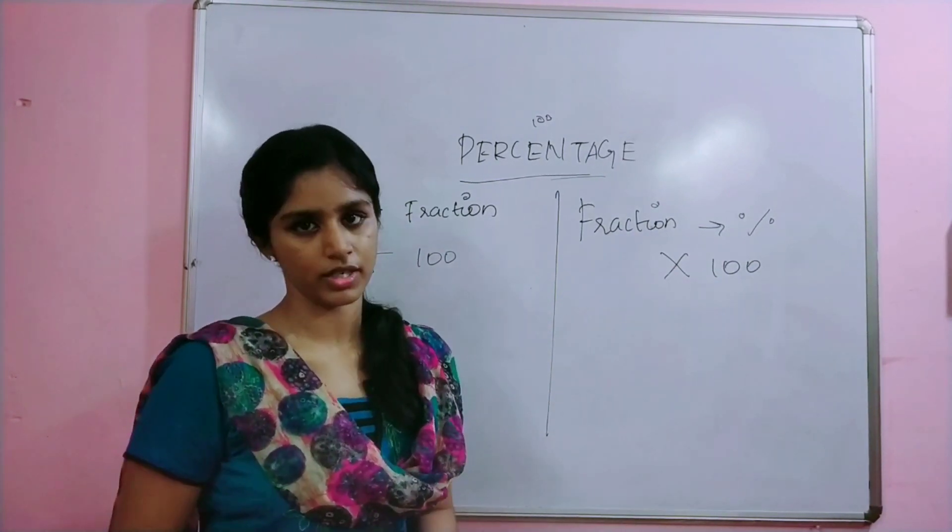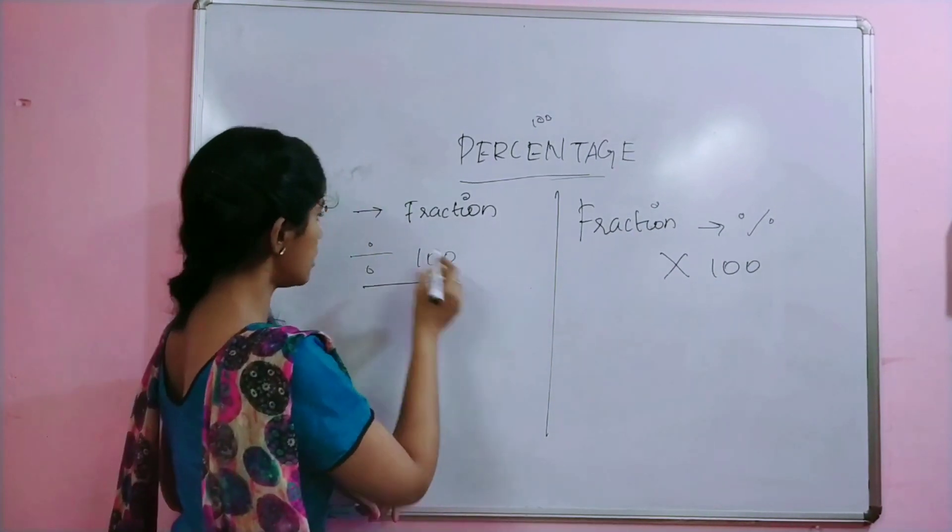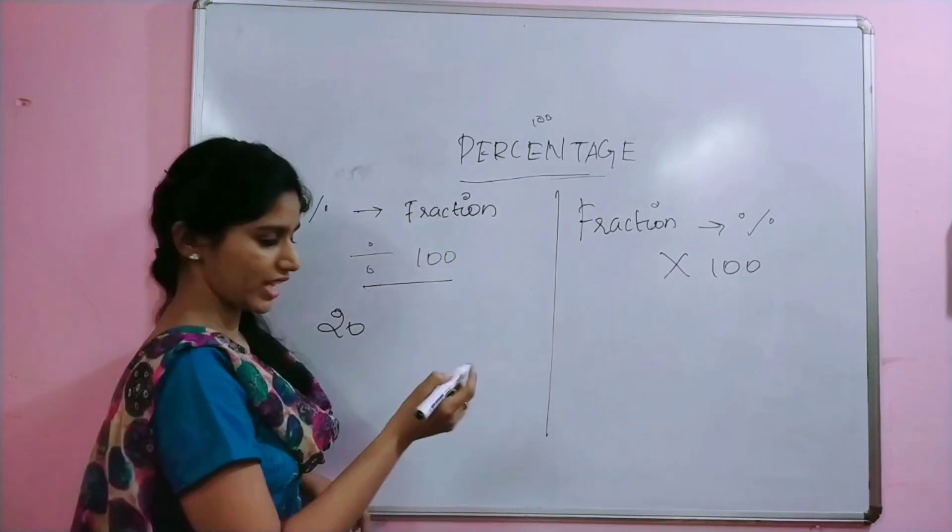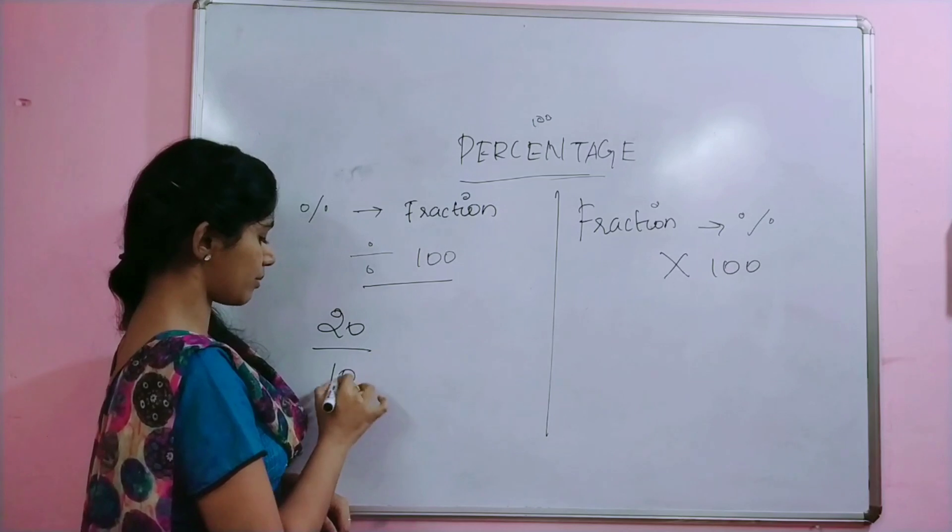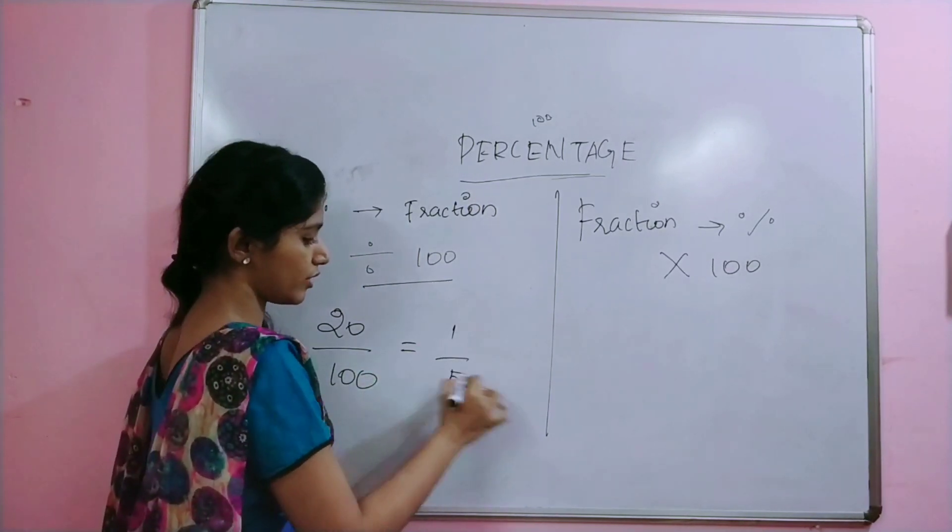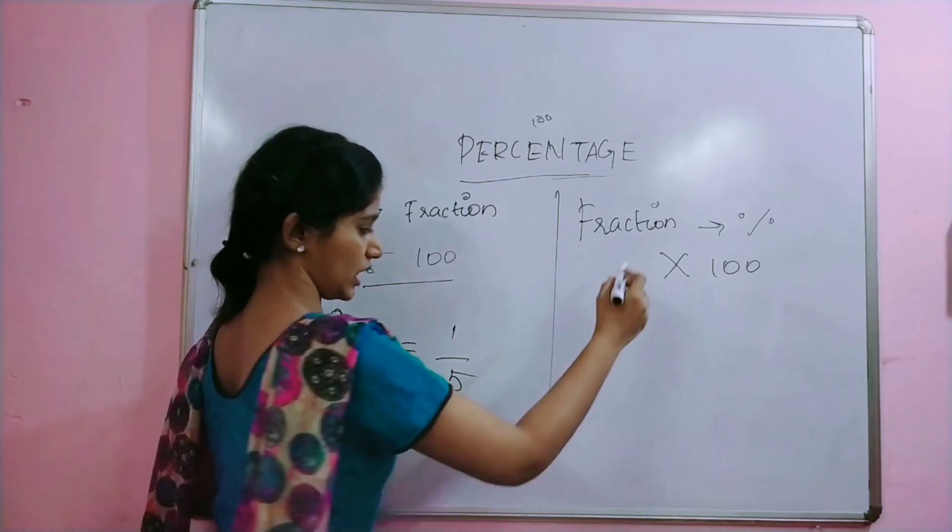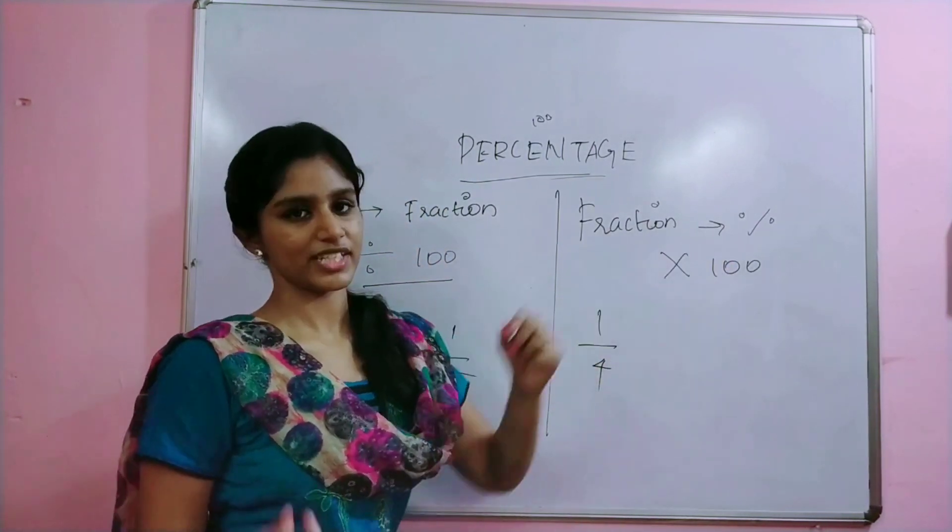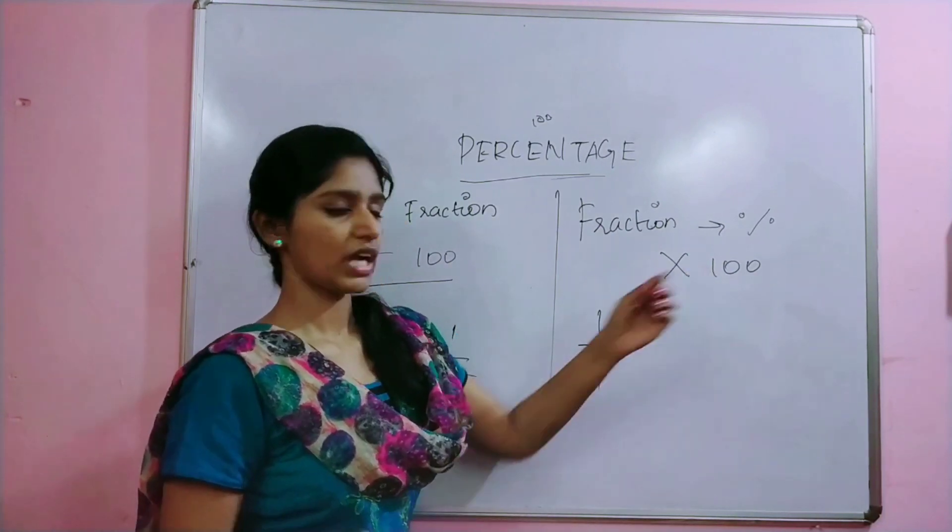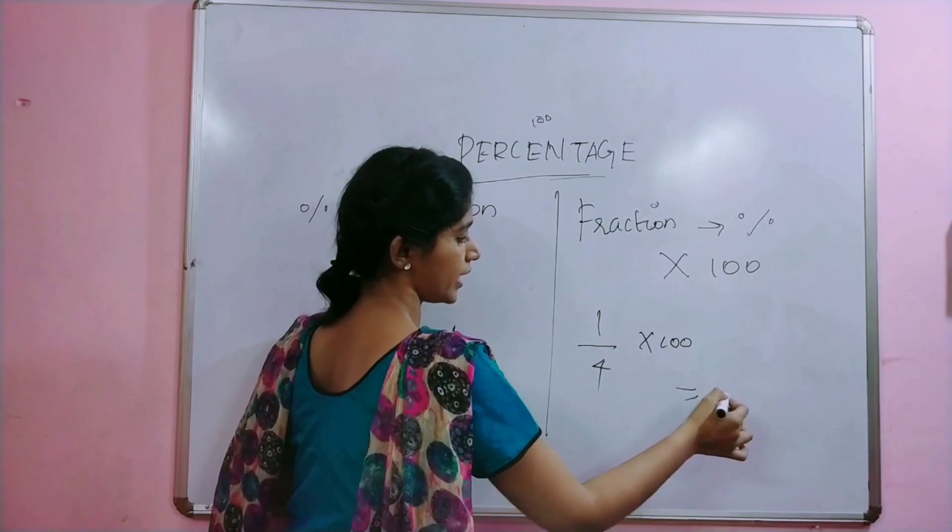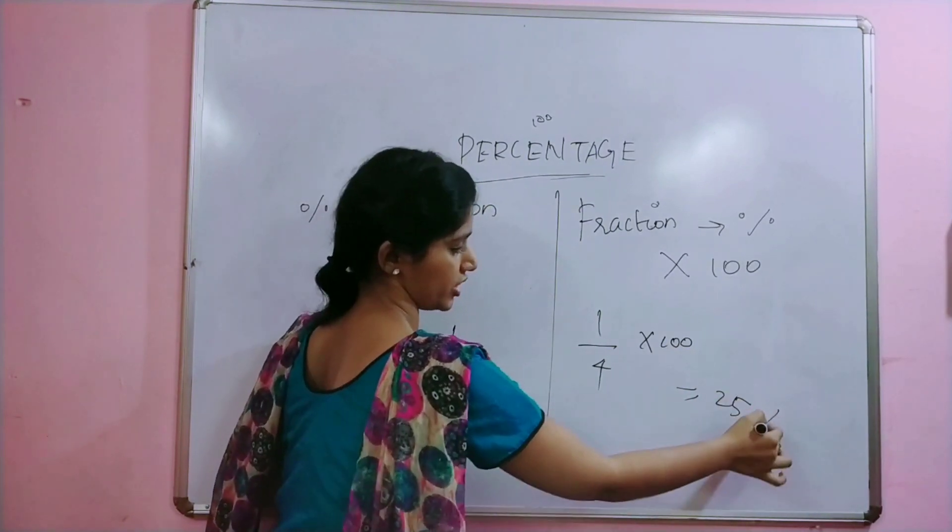If you're talking about a fraction, we multiply by 100. For example, if we have 20%, we divide 20 by 100, which gives us 1 by 5 fractionally. Now if we consider 1 by 4, to get percentage we multiply 100. So 1 by 4 into 100 gives us 25 percentage.